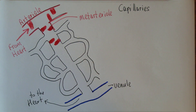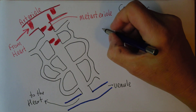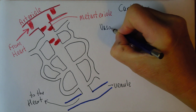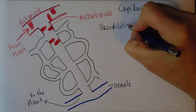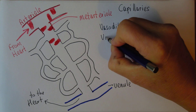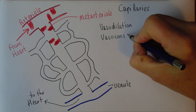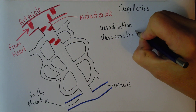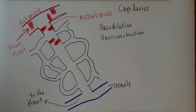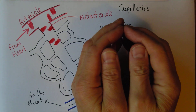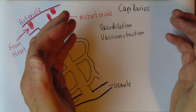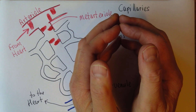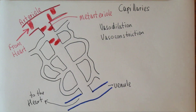These bands of muscle in the metarteriole are important because they can contract and they can relax. There is vasodilation and vasoconstriction. Vasodilation is when they dilate; vasoconstriction is when the muscles contract and the vessels get smaller, closing the vessels off.